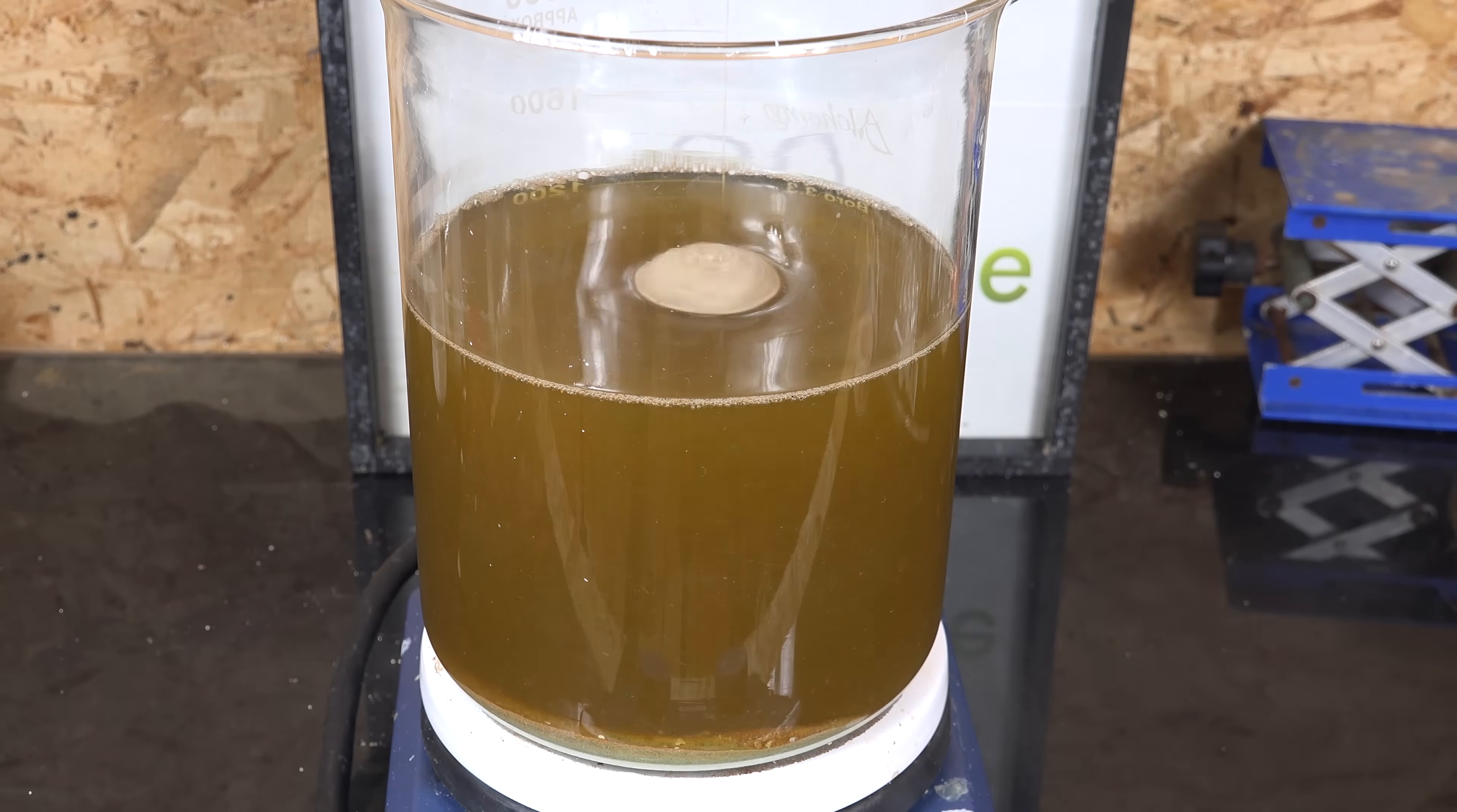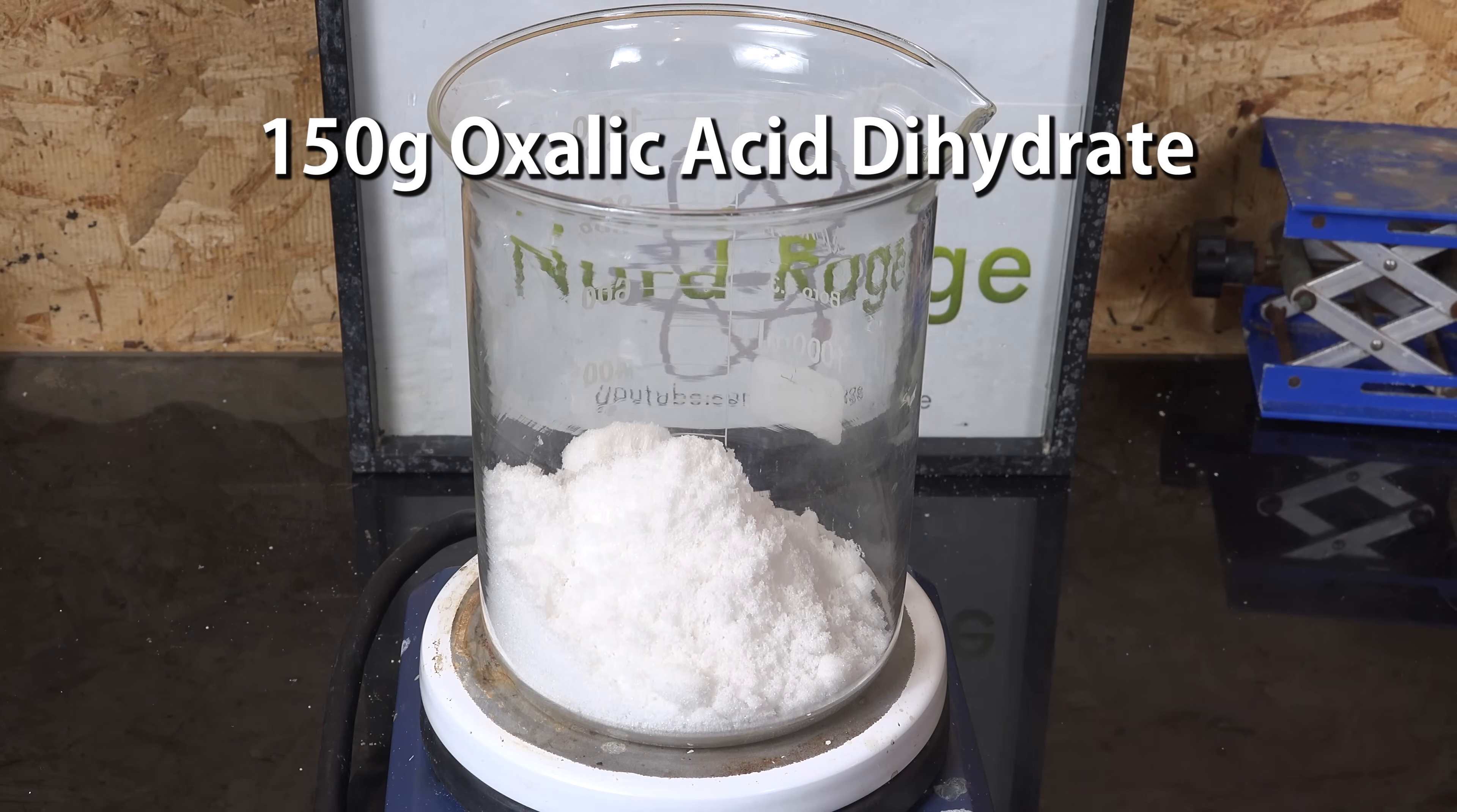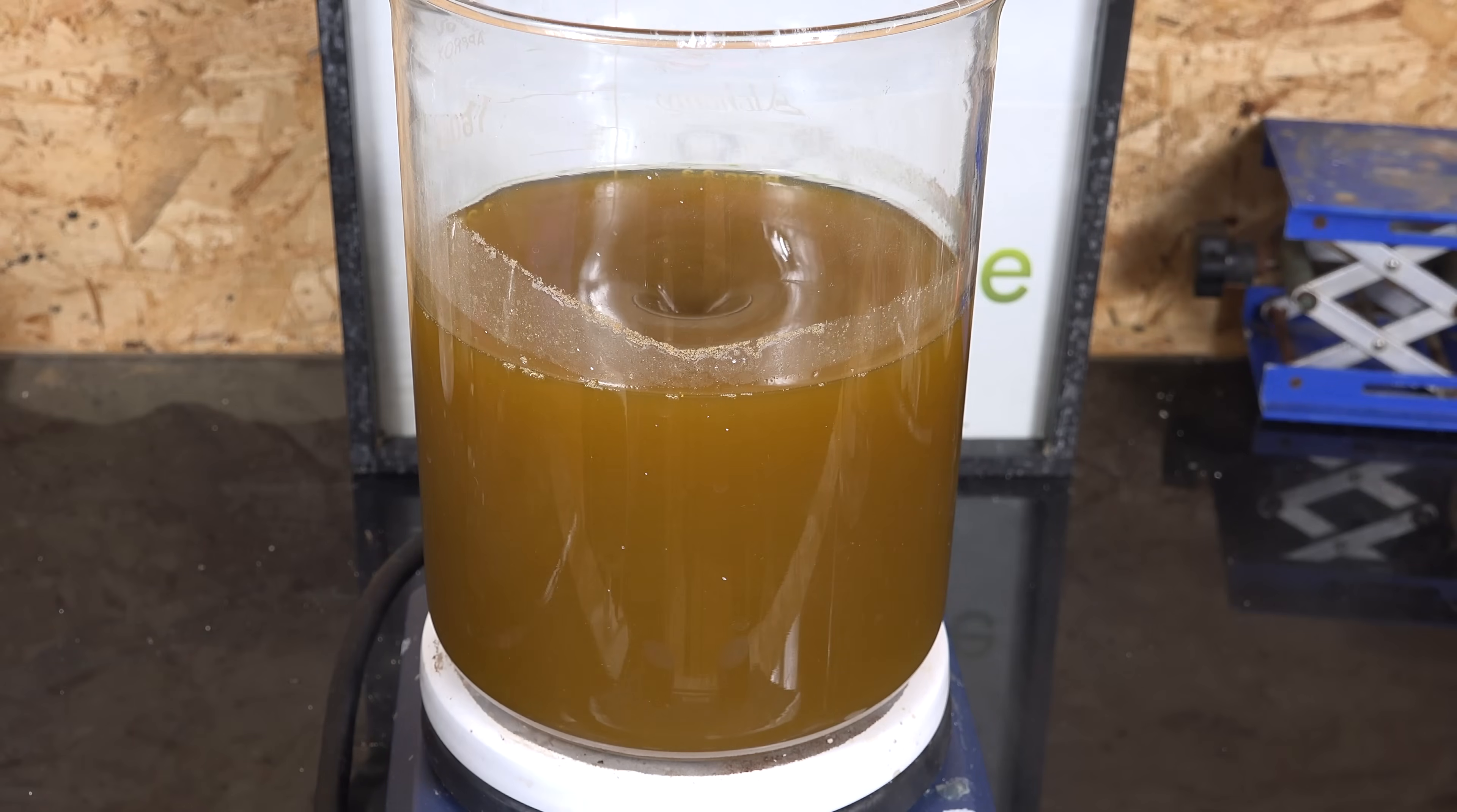You may need to gently heat it up to speed up the dissolution. While that is going, we get exactly half the mass of oxalic acid dihydrate or 150g and dissolve that in 300mL of water. We heat the oxalic acid to dissolve it. Then once it's dissolved we add that to the previous solution of iron sulfate.